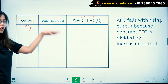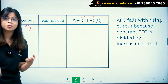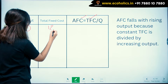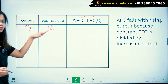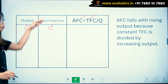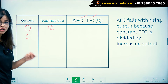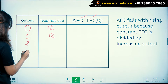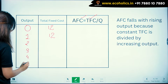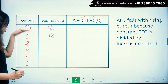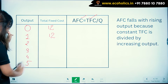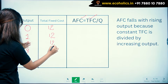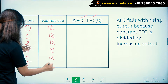At zero output, you still have to bear total fixed cost — irrespective of output. Let's take TFC as 12. So total fixed cost is 12. As output increases from 1, 2, 3, 4, to 5 units, total fixed cost does not change — it remains 12, 12, 12, 12, 12 at each level of output.